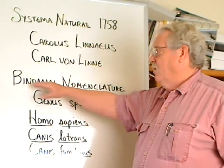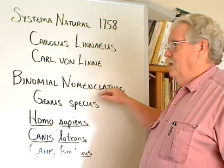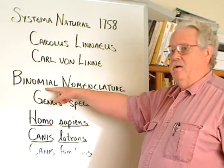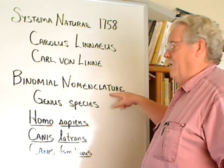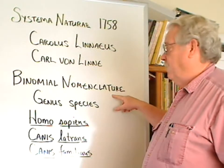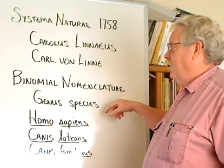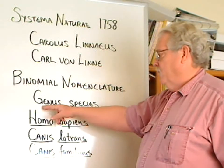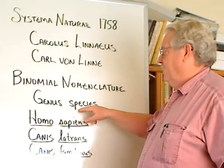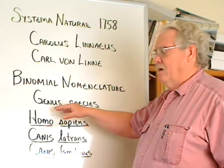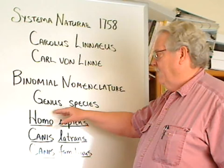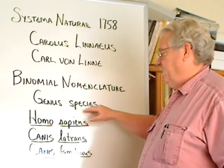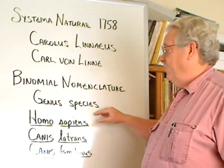He invented a concept we call binomial nomenclature, which basically means a two-name way of naming things — nomenclature. This two-name system involves what we call a genus and a species. You can remember these by thinking of genus as a general name and species as a specific name.